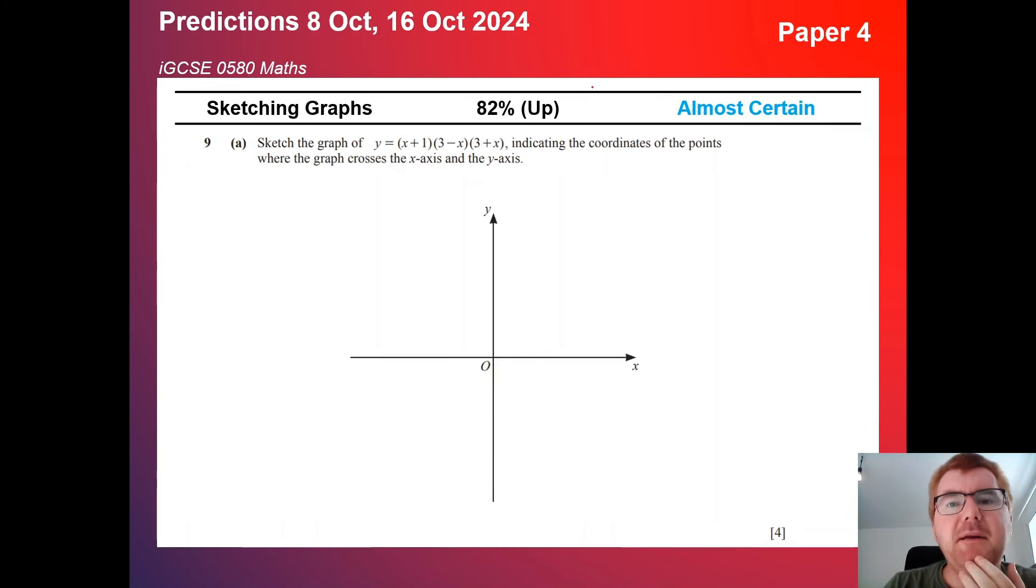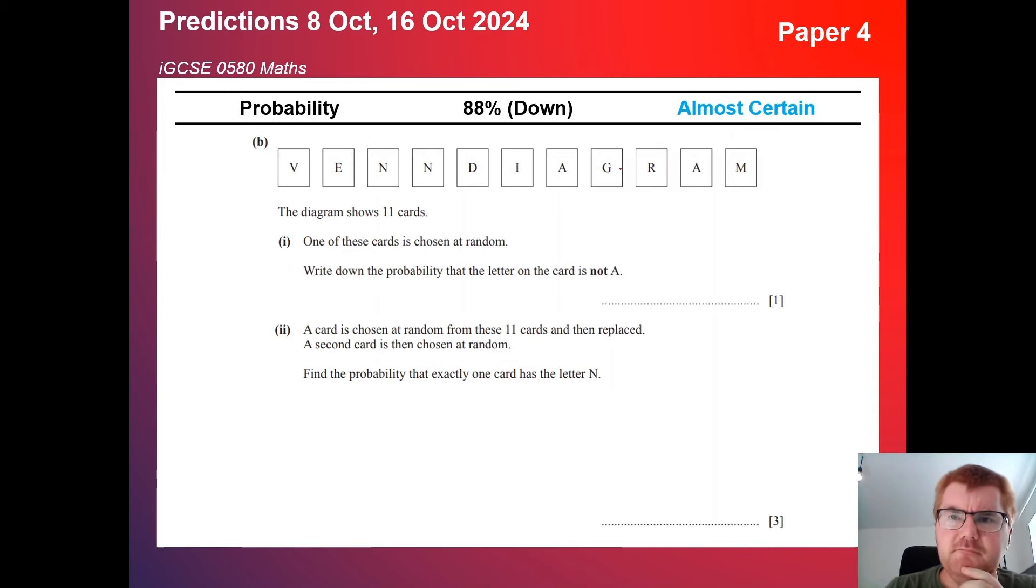On to sketching graphs. Now, up here at 82%, so in the almost certain category, this kind of question can vary quite a lot. Here, this is a cubic of some kind in the factorized form, and you need to sketch where it crosses the x and y axis. A four mark question, which is pretty generous considering you've already got it factorized, so you can already work out a lot of these things from the brackets you get given.